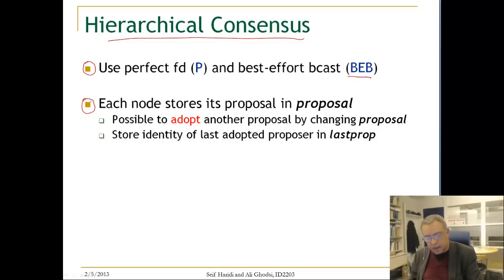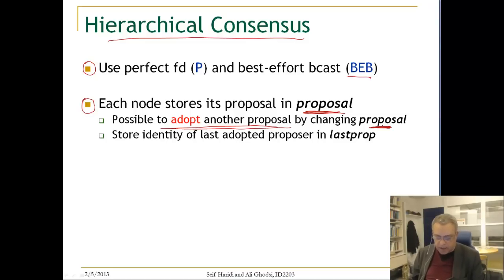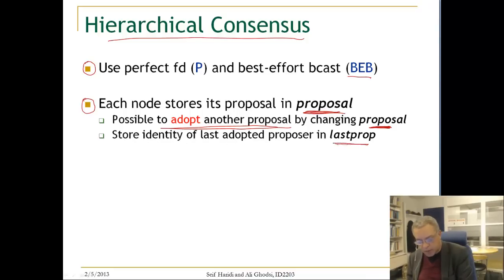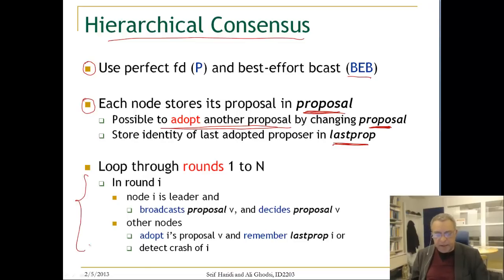Each node stores its proposal in a local variable called 'proposal'. A node may adopt another proposal by changing the value in that variable, and it stores the identity of the last adopted proposal in 'last_prop' — the identity of the node from which it adopted the last proposal. The algorithm works in rounds: it has N rounds for N nodes. In round 1, node 1 is the leader; in round 2, node 2 is the leader; and in round N, node N is the leader.